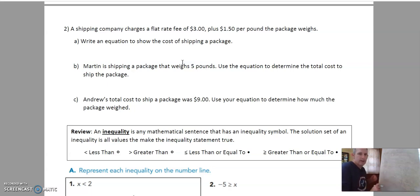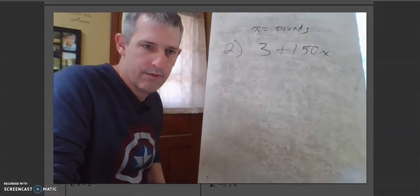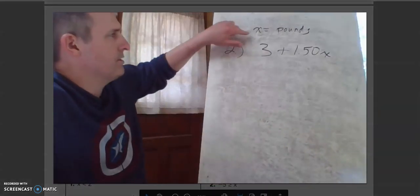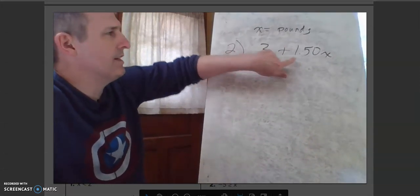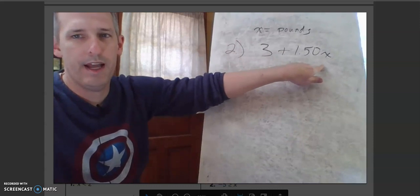So we've got three dollars plus a dollar fifty per pound. We're gonna use an x per pound. So I'm going to say a dollar fifty per x where x equals pounds. Okay and that's going to give us what we need here. Okay so here's a closer look. x equals the amount of pounds. So we got three dollars for a flat fee plus a dollar fifty per pound.